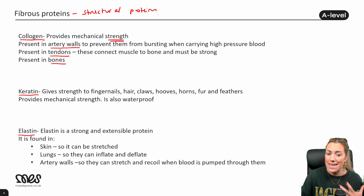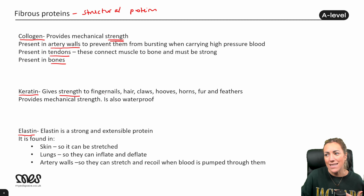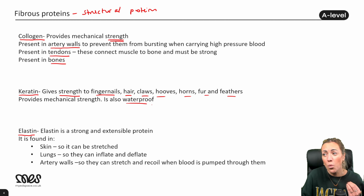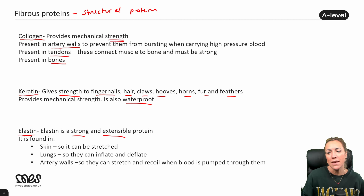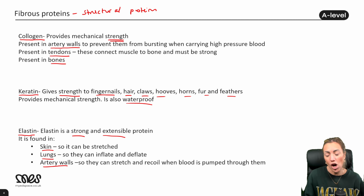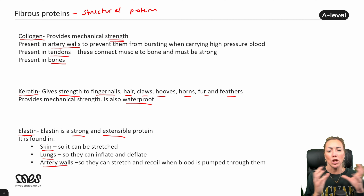Keratin is a fibrous structural protein that provides strength. You can find it in fingernails, hair, claws, hooves, horns, fur, and feathers — and it's also waterproof. Elastin is strong and extensible, meaning it can stretch and recoil. It's found in the skin so it can be stretched, in the lungs so they can inflate and deflate, and in the walls of arteries so arteries can stretch and recoil to regulate blood pressure.